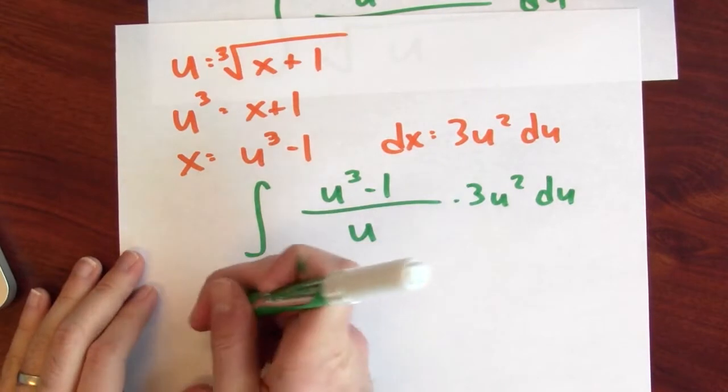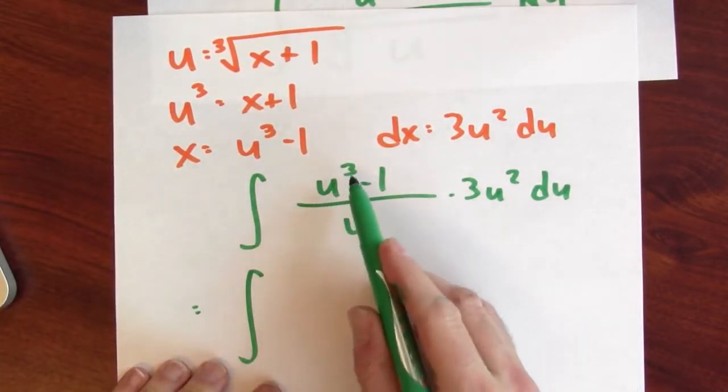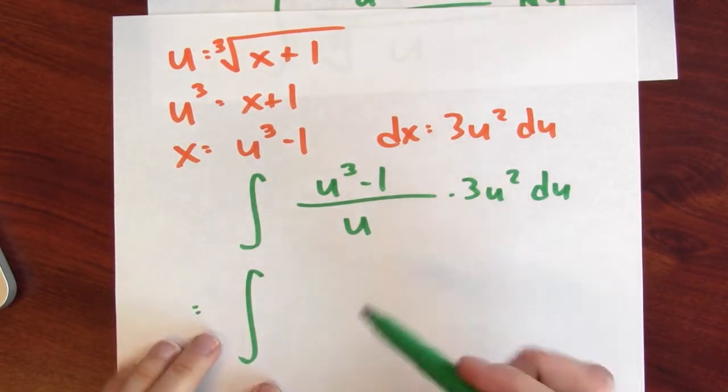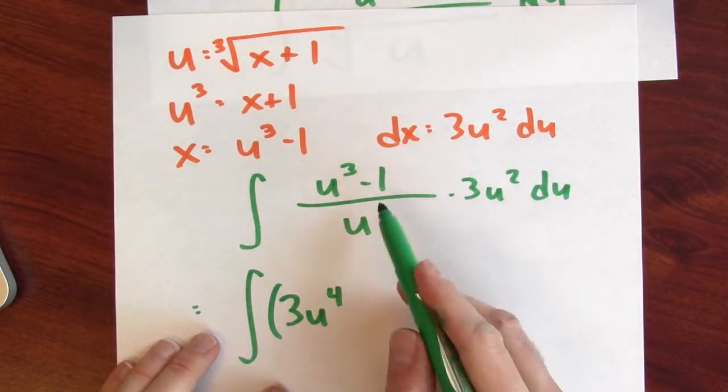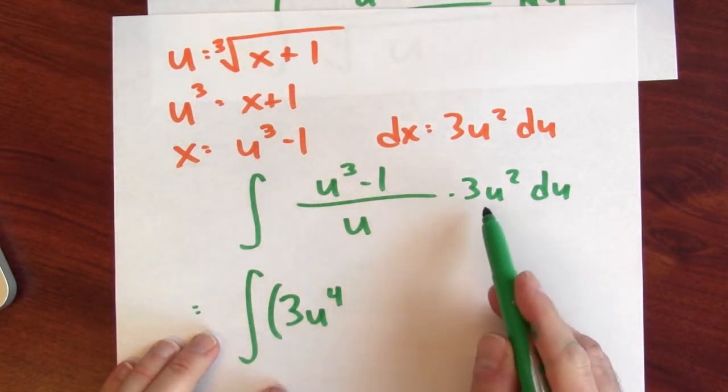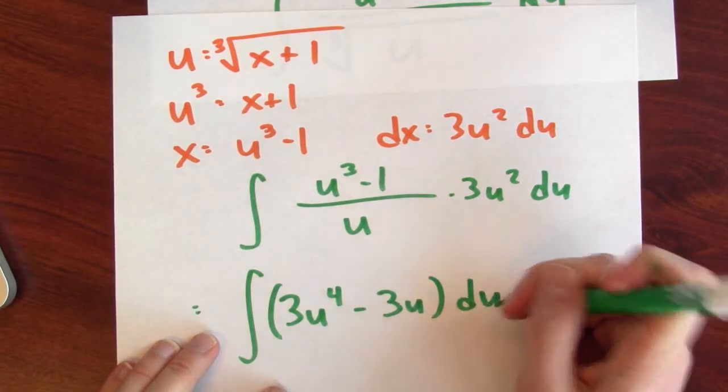And that's just a polynomial. So I'll simplify this a bit. This is the anti-derivative of, what is this here? u cubed over u times 3u squared. That's 3u to the fourth minus 1 over u times 3u squared. That's minus 3u du.